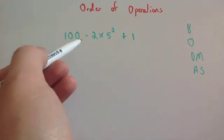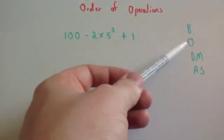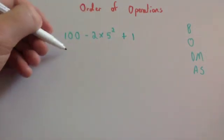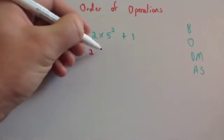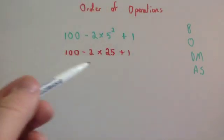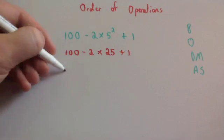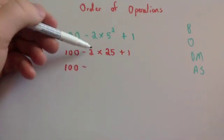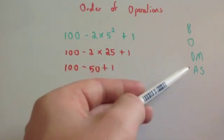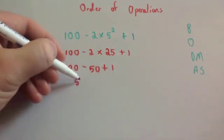This time we've got something more complicated: 100 subtract 2 times 5 squared plus 1. We have no brackets, but we do have an order — 5 squared. So we do that first: 5 squared is 25, giving us 100 subtract 2 times 25 plus 1. Next we have a multiplication: 2 times 25 is 50, giving us 100 subtract 50 plus 1. Now it's just addition and subtraction, so we work left to right: 100 take away 50 is 50, plus 1 is equal to 51.